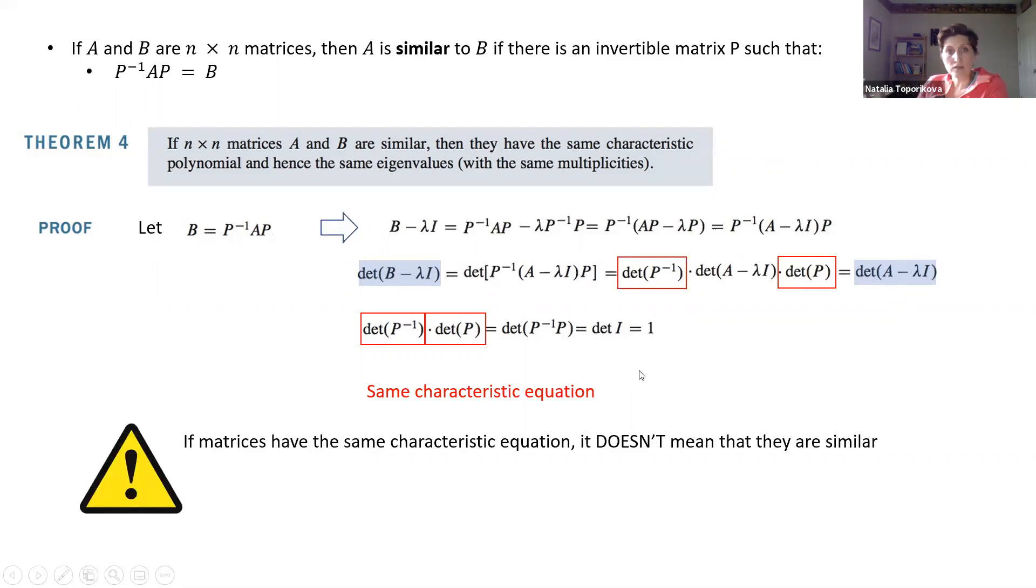However, I would warn you against a very common mistake. This theorem is only one directional. So if matrices are similar, the characteristic equations will be the same. However, it doesn't work in the opposite order. If we have the same characteristic equation, it doesn't mean that the matrices are similar. For example, here there's a couple of matrices A and B which have the same characteristic equations, but they are not similar. So be very careful with this property.